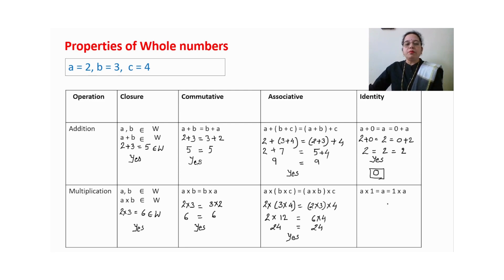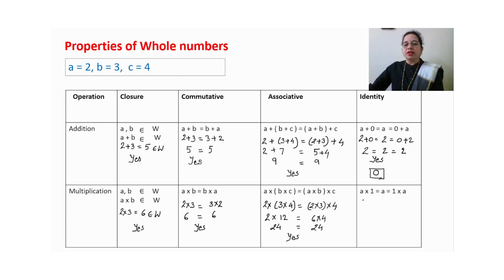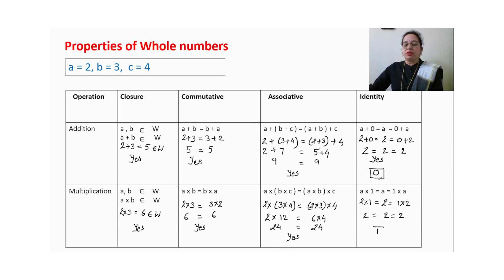For the identity element in multiplication: commutative property should hold, and multiplying by 1 should give the same number. So 2×1=2, and 1×2=2. We get 2 everywhere. We can observe the identity element in multiplication of whole numbers. The multiplicative identity is 1 for whole numbers.